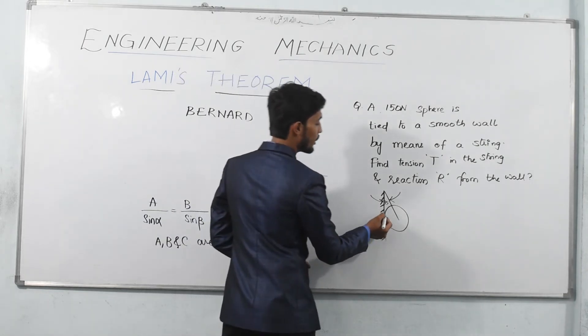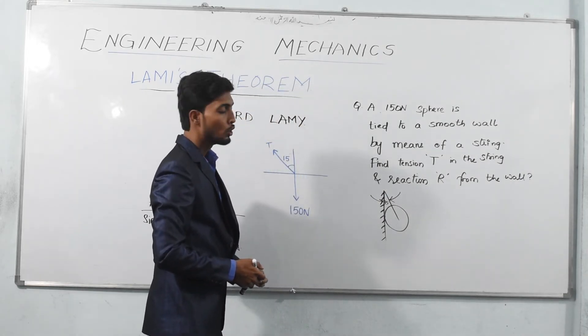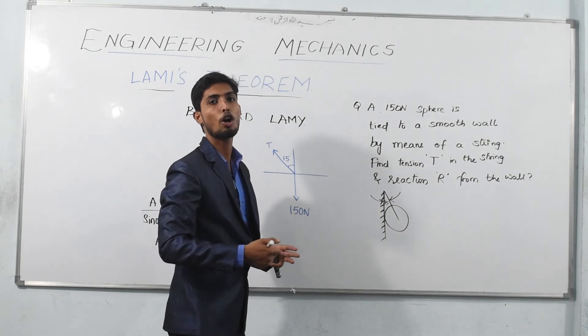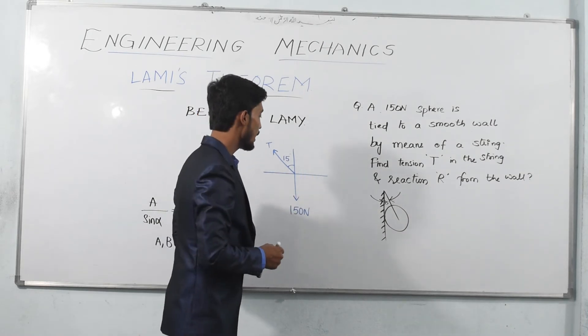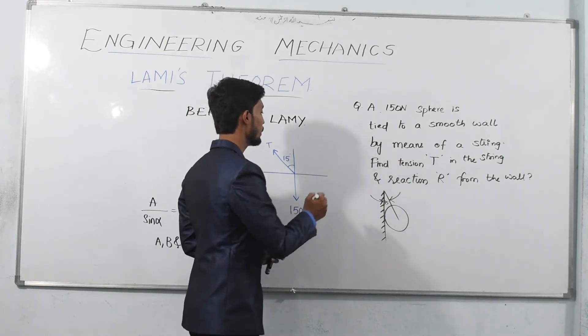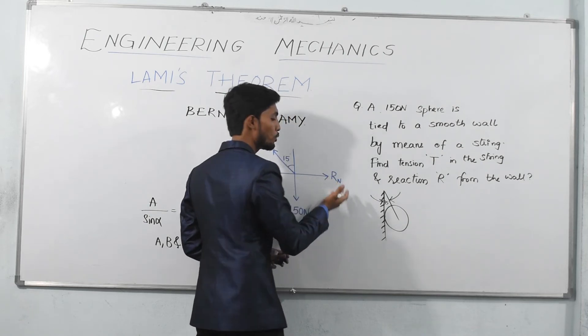This sphere is in contact with wall at one point. So this wall will have an opposing reaction onto the sphere to avoid the contact between them. And as per the surface, the reaction would be normal, that means it would be exactly 90 degrees. So Rn comes to your right.